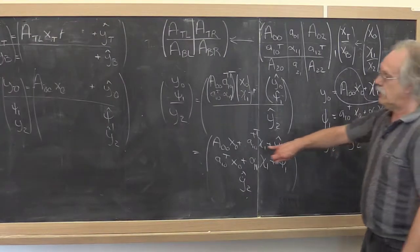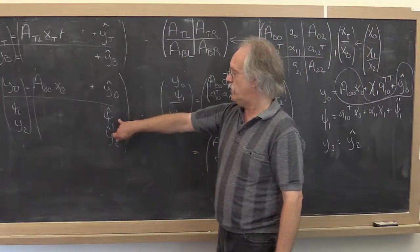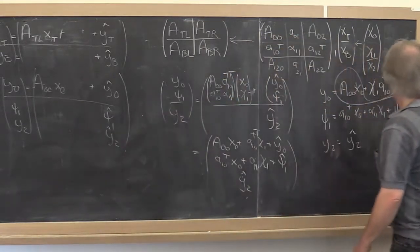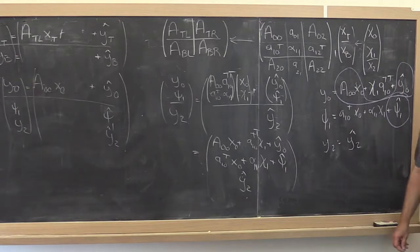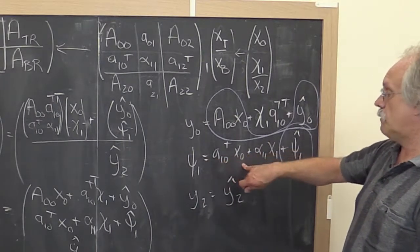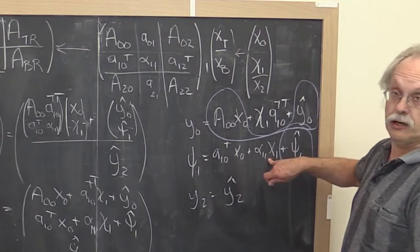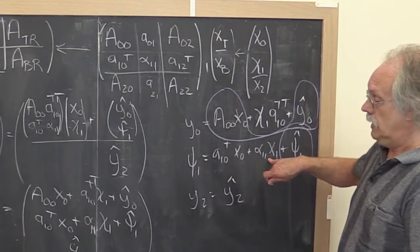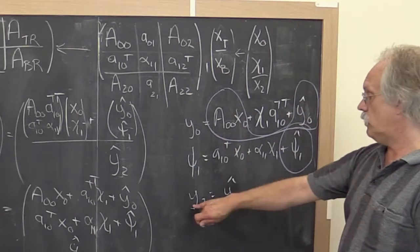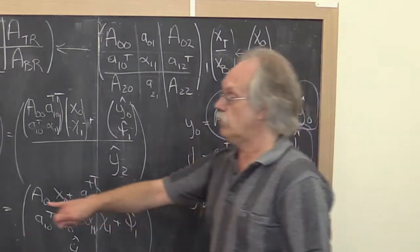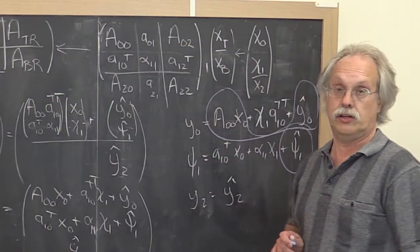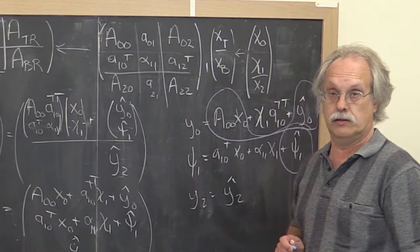Then you look at psi one. And you say, well, psi one already contains its original contents psi one hat. So this is already in psi one. And what we need to do is update it with this dot product plus the scalar product. And that tells us how to update psi one. And then we look at y two and we say y two already has y two hat in it. It needs to have y two hat in it. So nothing needs to happen to it whatsoever.